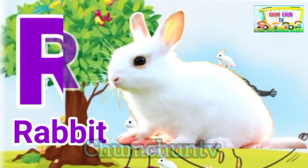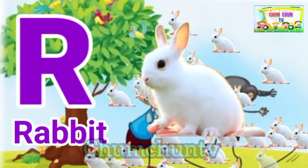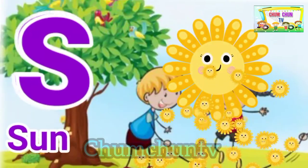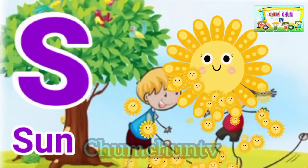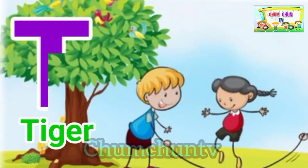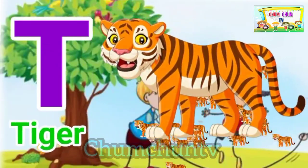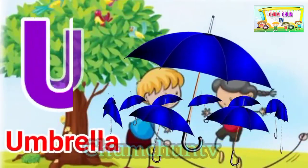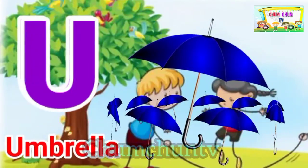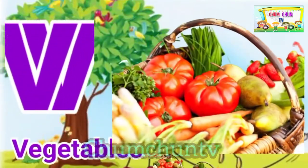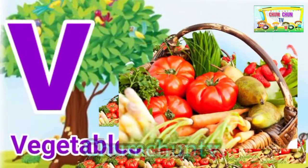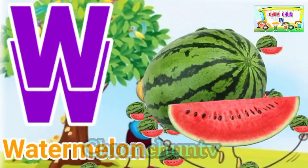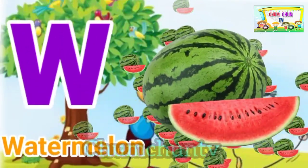R for rabbit, S for sun, T for tiger, U for umbrella, V for vegetables, W for watermelon.